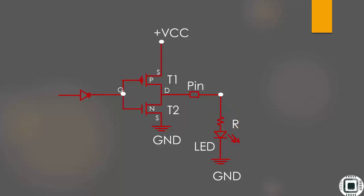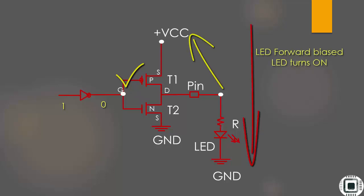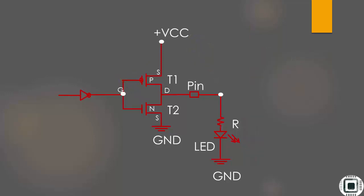So when I write 1 to the input over here, the top transistor will be on and the pin will be pulled to high, and the LED will be forward biased which makes it glow. On the other hand, when I write 0, the top transistor will be turned off and the bottom one will be turned on, which pulls the pin to the ground. As a result, the LED will be turned off.